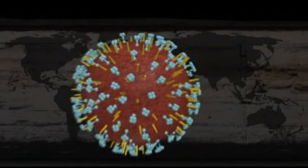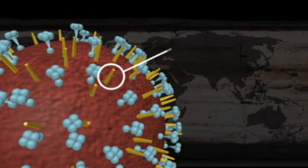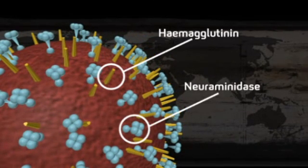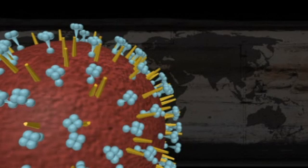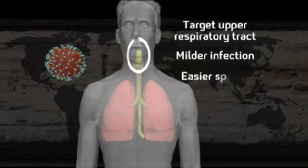Flu viruses have proteins on their surface — haemagglutinin and neuraminidase — the H and N that defines them. Haemagglutinin is what binds to human cells to invade them. On this virus, its target is the upper respiratory tract.